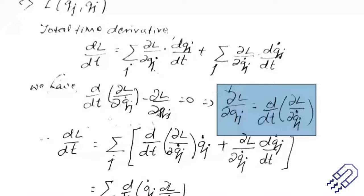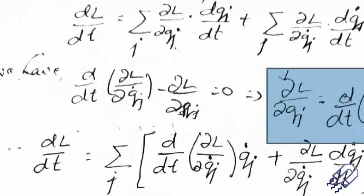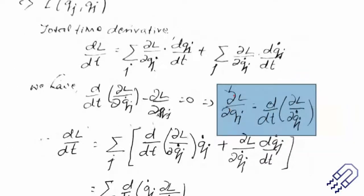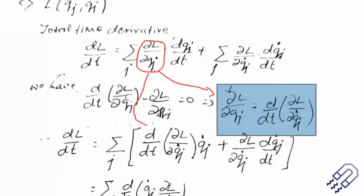Substituting, in place of del L / del q_j dot we write d/dt of (del L / del q_j dot), and d q_j dt is simply q_j dot. The second term remains as is. Now, d/dt of (q_j dot times del L / del q_j dot) can be expanded by the product rule as: d/dt(q_j dot) times del L / del q_j dot, plus q_j dot times d/dt(del L / del q_j dot). This is differentiation by parts.